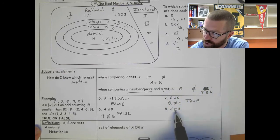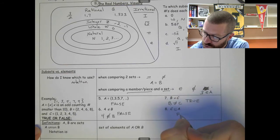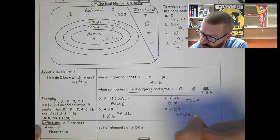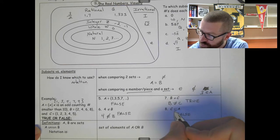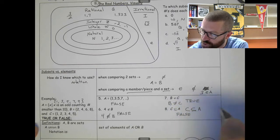And this says C is a subset of A. And so are all of these numbers in A? And that's false. 2 is not in A. So this is false. And this symbol, I'll write this a little bigger. This symbol means subset. So let's see. It looks like a sideways U with a line underneath it. It's a subset of A.